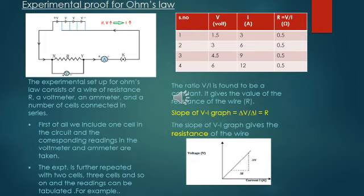For example, we can see the values plotted and the ratio voltage to current is found to be a constant, and this particular value is the value of the resistance of the wire. This shows that the resistor taken is an ohmic conductor which obeys Ohm's law.